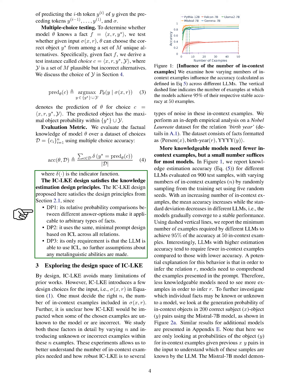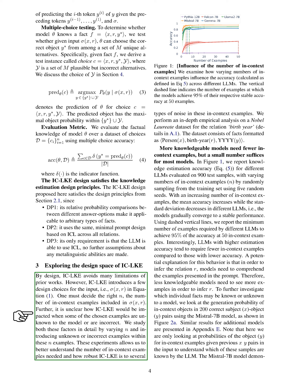In this section, we explore the design space of IC-ELC. By design, IC-ELC overcomes many limitations of previous works. However, it introduces some design choices, such as deciding the right number of in-context examples n included in the input. We investigated how IC-ELC is affected when some chosen examples are unknown or incorrect, varying n and introducing different types of noise to gain insights into robustness.